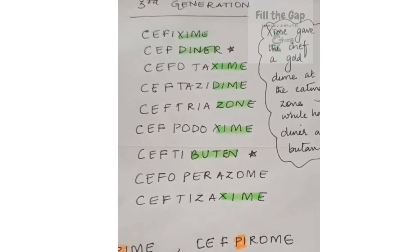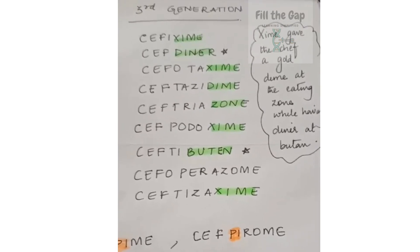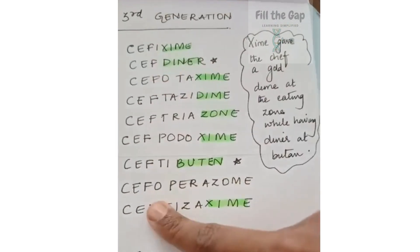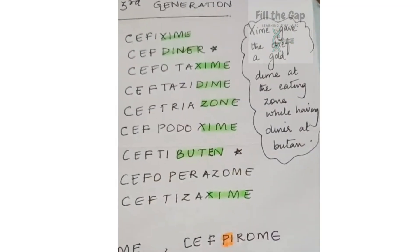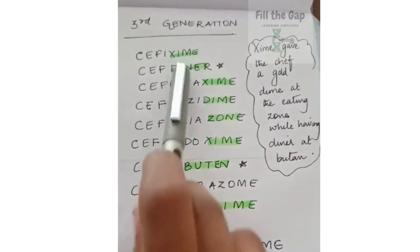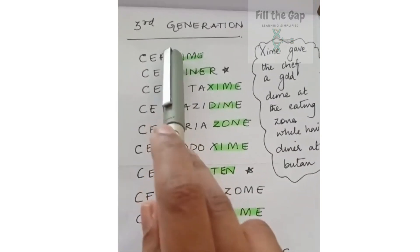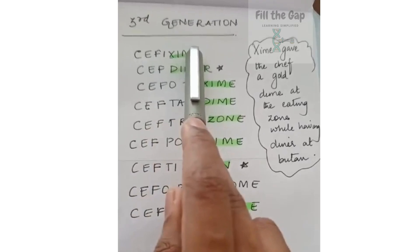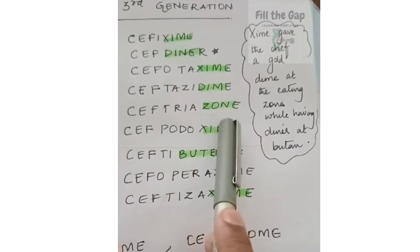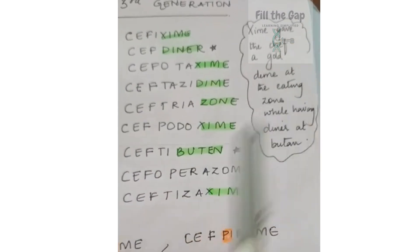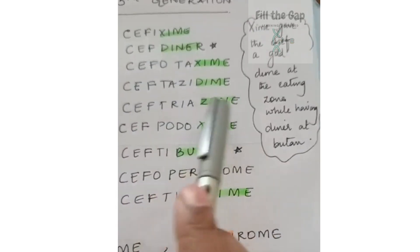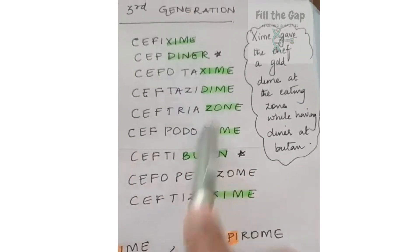Next is third generation. Generally in third generation you will see a lot of 'zyme,' you will see 'dime,' you will see 'zone' — zyme, zone, dime — all these endings you will see.